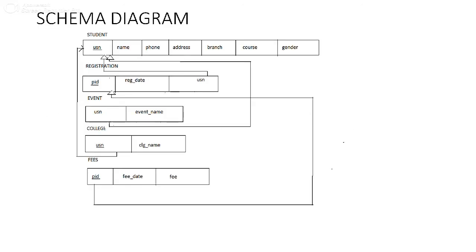This is the schema diagram of the Fest Registration System. Here student, registration, event, college, and fees are the entities. Student has the attributes USN, name, phone, address, branch, course, and gender, where USN is considered as the primary key of student.